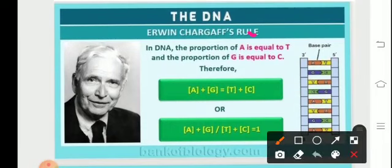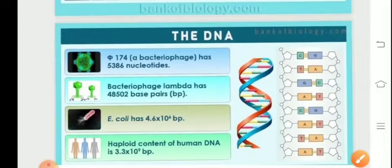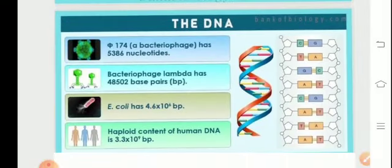Erwin Chargaff's Rule states that the proportion of A is equivalent to T, and the proportion of G is equal to C — meaning purines are always equivalent to pyrimidines. This can be written as A + G = T + C, or (A + G) / (T + C) = 1. The bacteriophage φX174 has 5,386 nucleotides, and bacteriophage lambda has 48,502 base pairs.